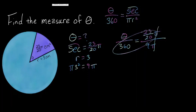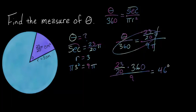Cross multiply and divide: 23 over 20 times 360 divided by 9 is equal to 46 degrees.